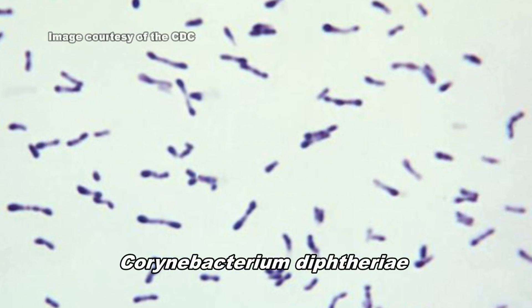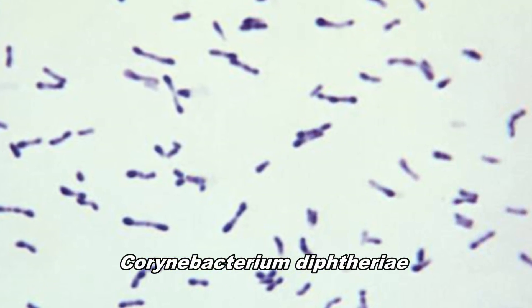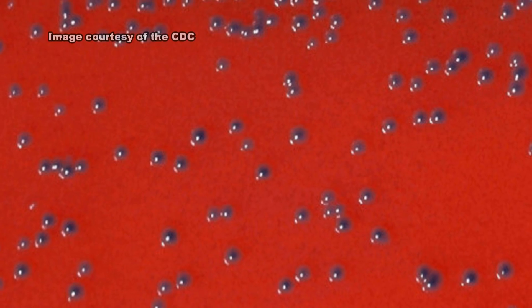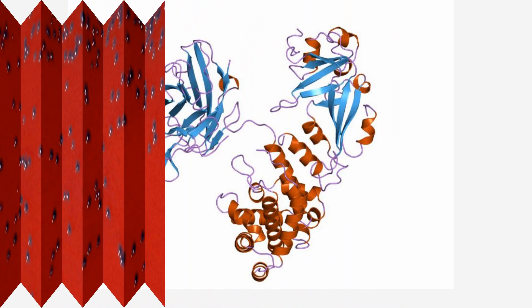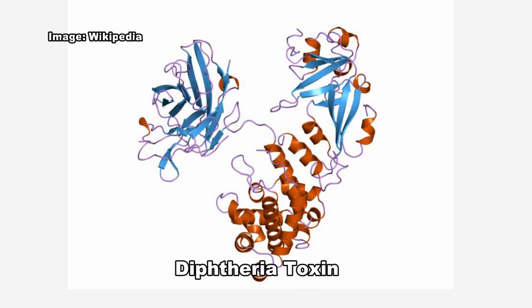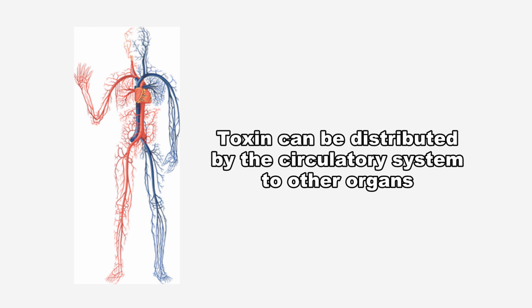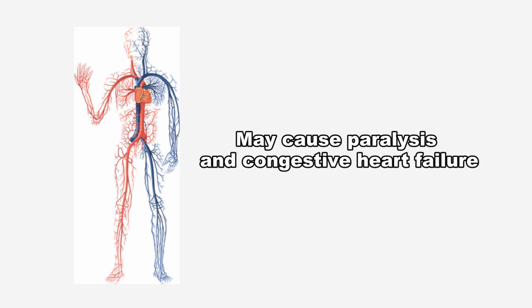Chorinibacterium diphtheriae is a pathogenic bacterium that causes diphtheria. It is a gram-positive, non-motile, club-shaped bacillus. It produces an extremely potent exotoxin known as diphtheria toxin, which alters protein function in an infected individual. The toxin can be distributed by the circulatory system to other organs and may cause paralysis and congestive heart failure.